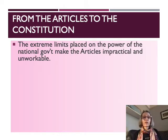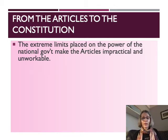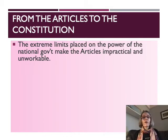As the textbook points out, the extreme limits placed on the power of the national government made the Articles of Confederation really unworkable — it was an impractical document. For example, it was unable to raise taxes without approval of the states. The United States had a huge war debt owed to France for assistance during the Revolutionary War, but the states refused to raise money to pay it off. The Articles of Confederation just didn't have the tools necessary for this new national government to survive.